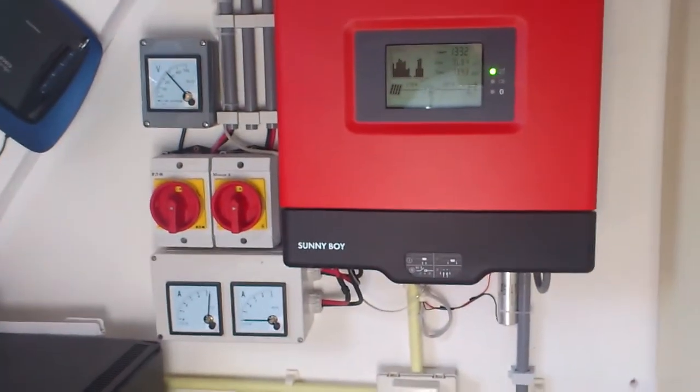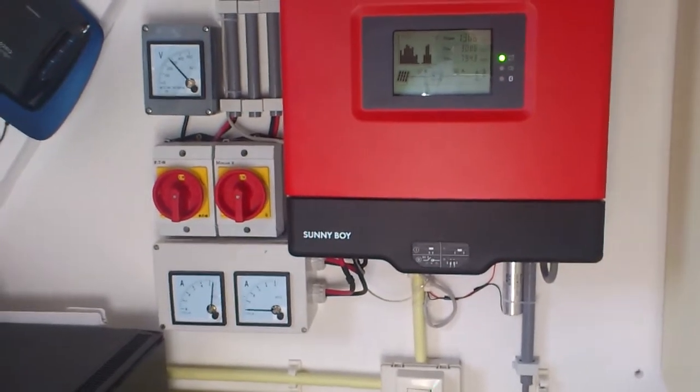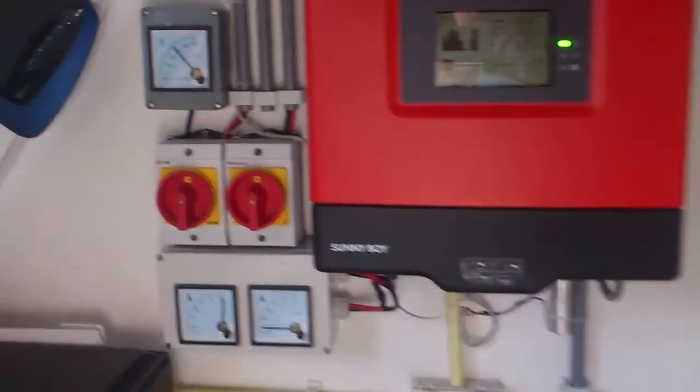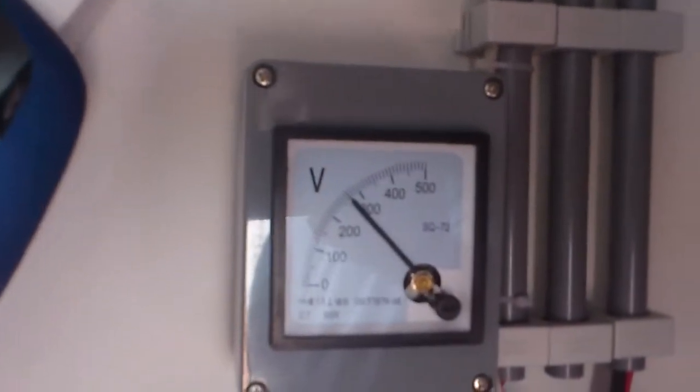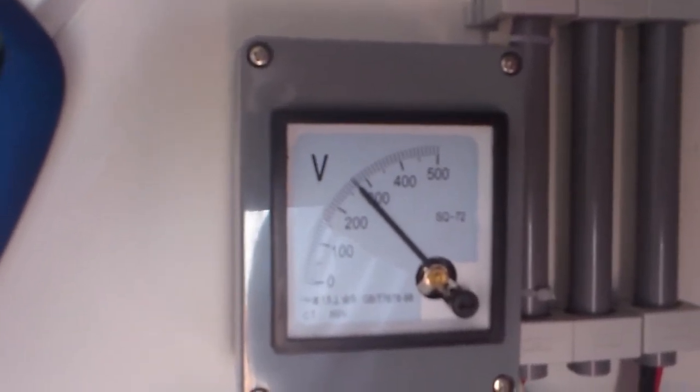Hi there, this is a quick introduction to some analog dials on a SunnyBoy 2000HF. What we have here is a voltage meter which is, pardon the glare, currently at about 290 volts DC.